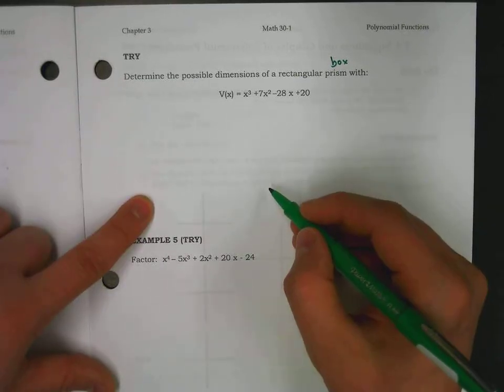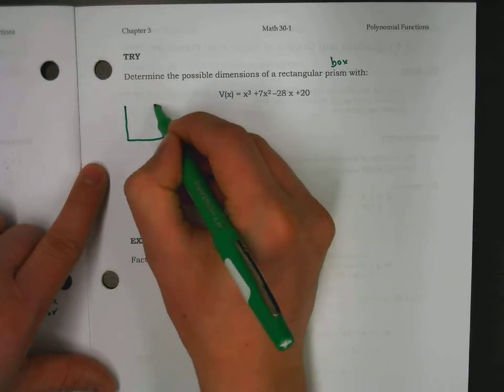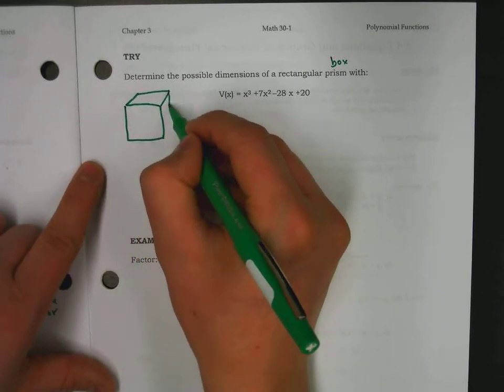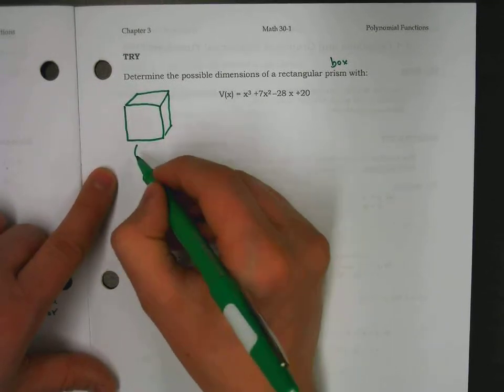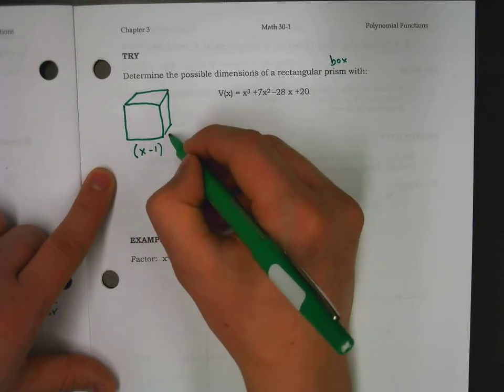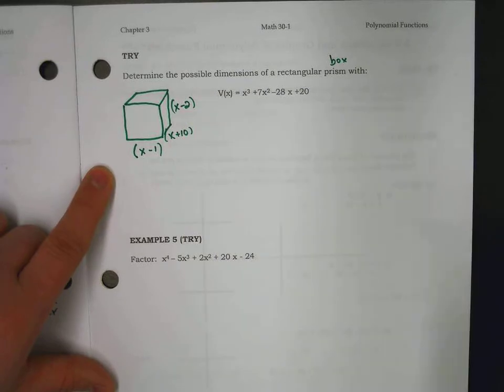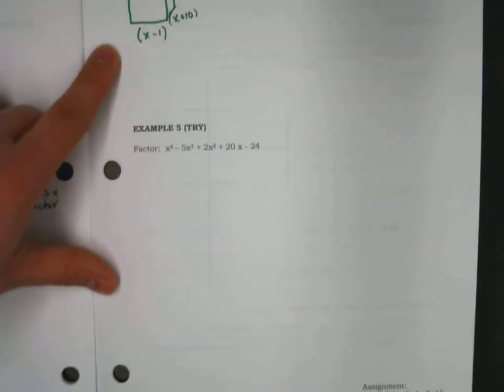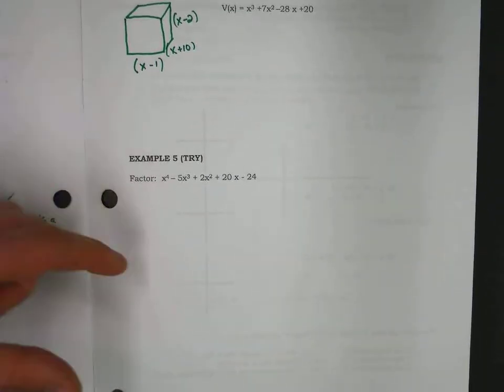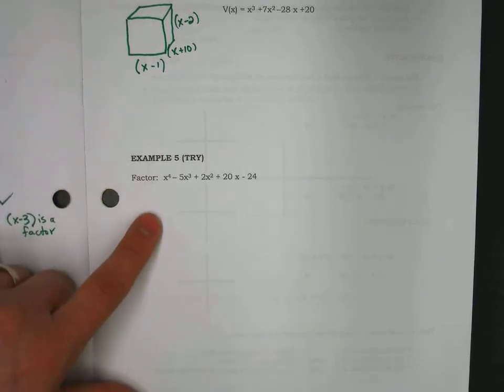Now, if you wanted to pause the video, I'll write the answer, but this is one that you can try if you like. Your factors would end up being x minus 1, x plus 10, and x minus 2. But again, worth trying. I have one more to try after this, and I wanted to skip the previous one and do one a little bit more intense.